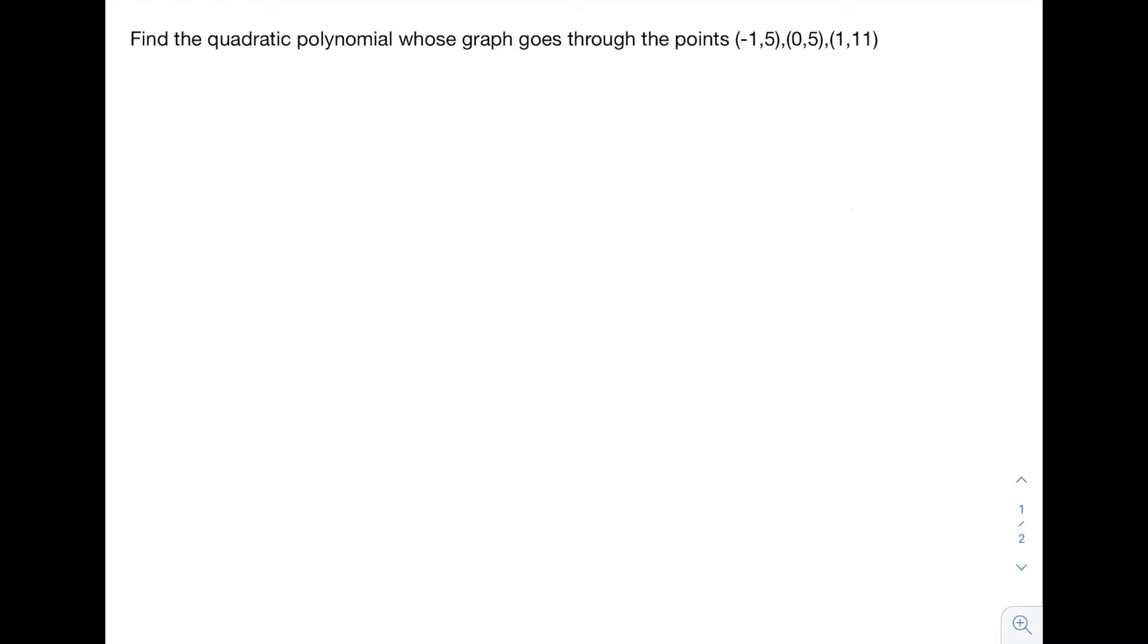So our first question here is, find the quadratic polynomial whose graph goes through the points (-1, 5), (0, 5), and (1, 11). So remember, this method will work for whichever points you have. These are just the points I'm using for this example.